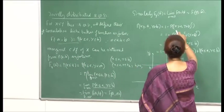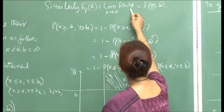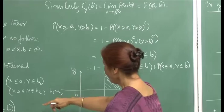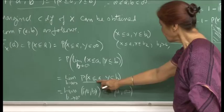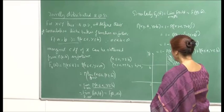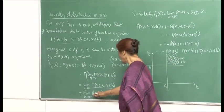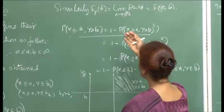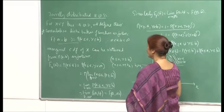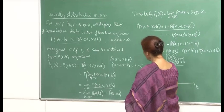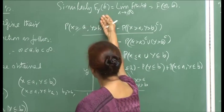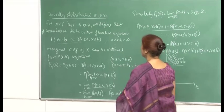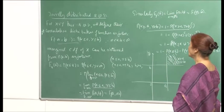Similarly, if you want the marginal of Y, take the limit as a → ∞ of F(a, b), which gives F(∞, b). The same argument applies — b remains the same while a keeps increasing, giving an increasing sequence of sets, so the limit and probability can be exchanged. The properties defined for a single-variable CDF apply here to F_X and F_Y, and combining them gives the properties that the joint CDF must satisfy.